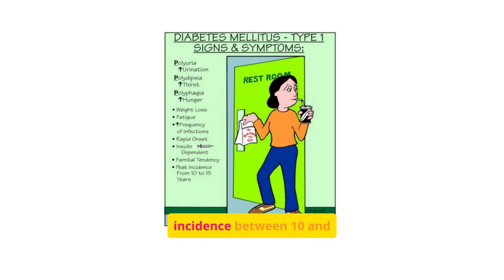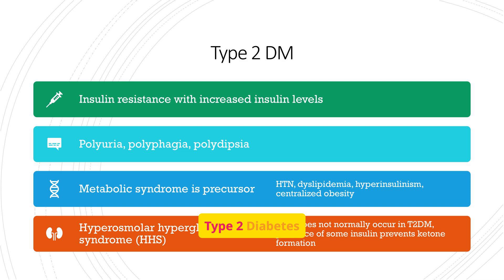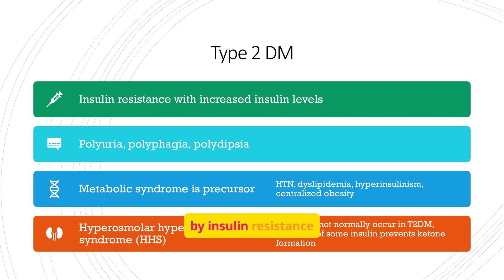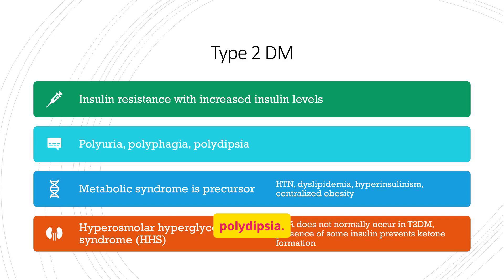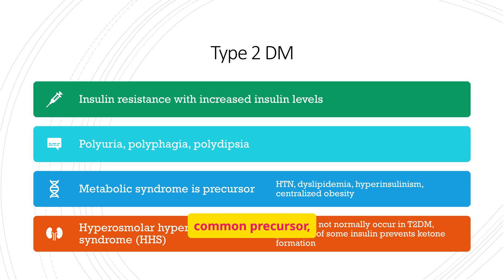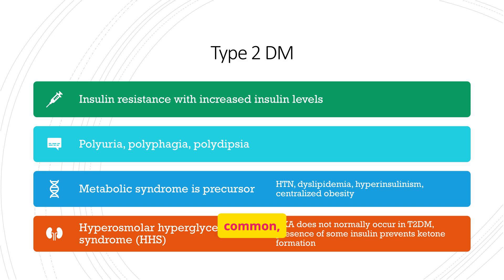Type 2 diabetes mellitus is characterized by insulin resistance and increased insulin levels. Patients may experience polyuria, polyphagia, and polydipsia. Metabolic syndrome is a common precursor, and while DKA is less common, hyperosmolar hyperglycemic syndrome, HHS, can occur.